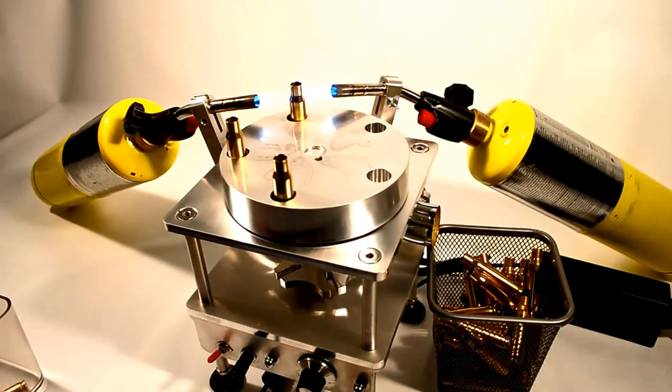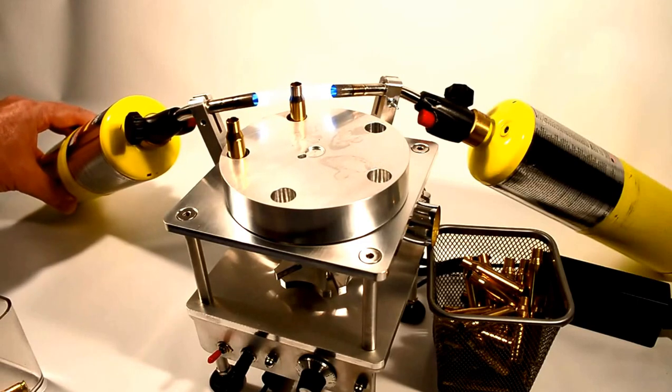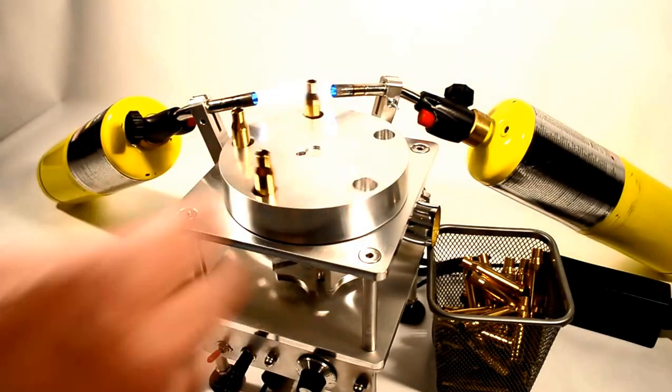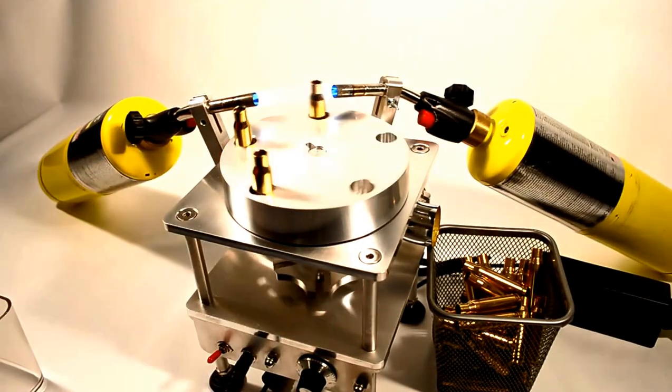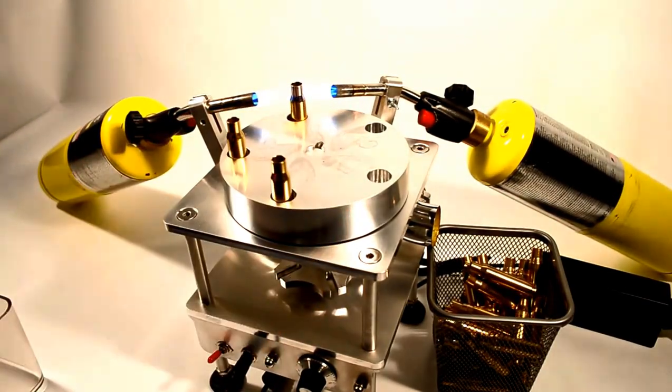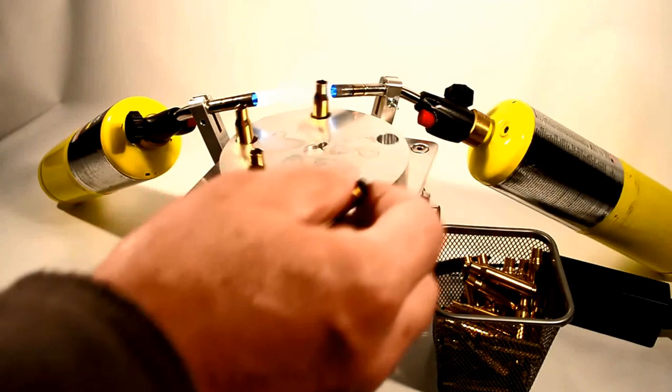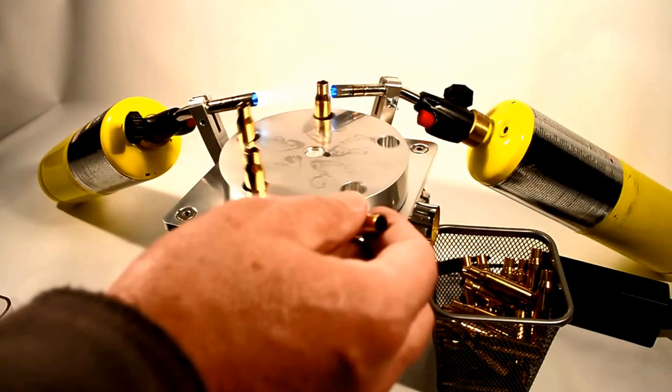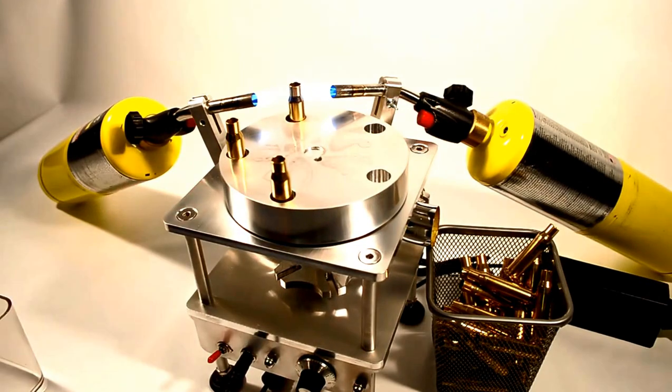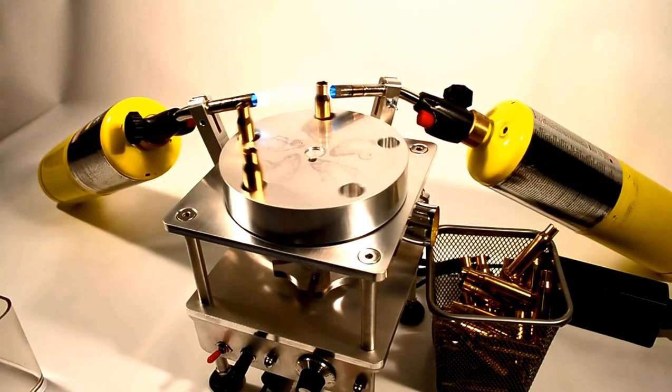You'll notice that we can adjust the torches up and down just by giving them a little twist, and that alters the angle and direction that the torch is hitting the case. You can also move the torch holder up and down the leg to accommodate different lengths of cartridges.